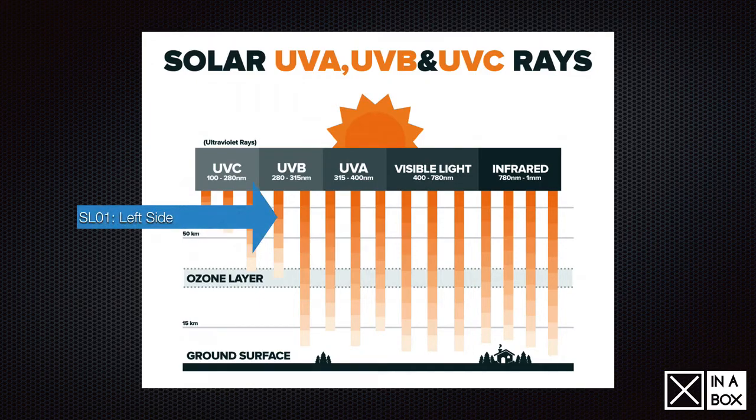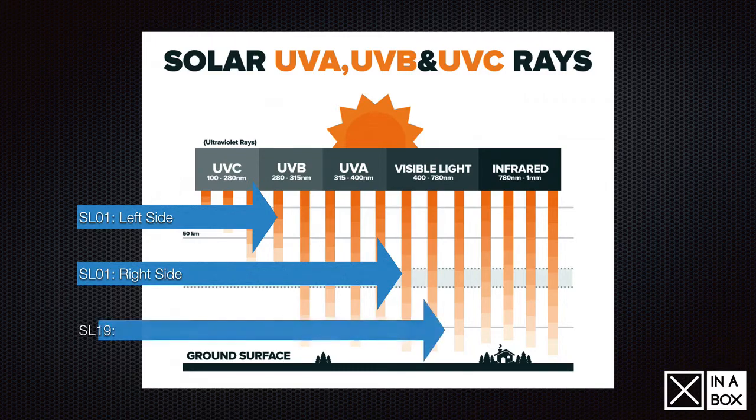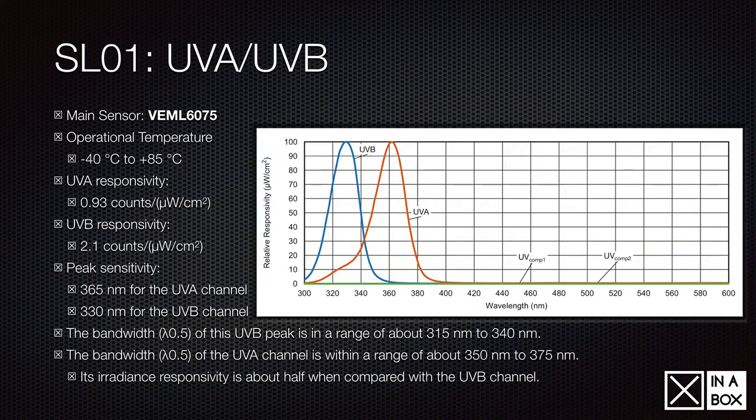We have a sensor, SL01, that measures UVA and UVB on the left-hand side. I'm going to show in the graph just now what it picks up. Notice I say 280 here, and actually it only starts really measuring UVB from 315 on your sensor, simply because it's not all the UVB that comes down. Then we have, on the right-hand side of the SL01, the visible light sensor that measures that. While the UVA and UVB is measured in microwatts per square centimeter, the visible light is measured in lux, and the infrared is measured as a temperature in Celsius. That's measured by the SL19.